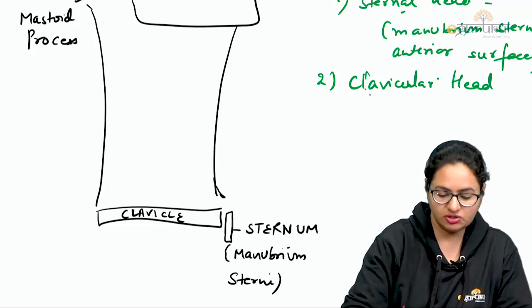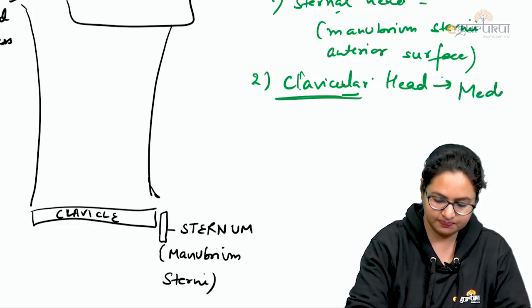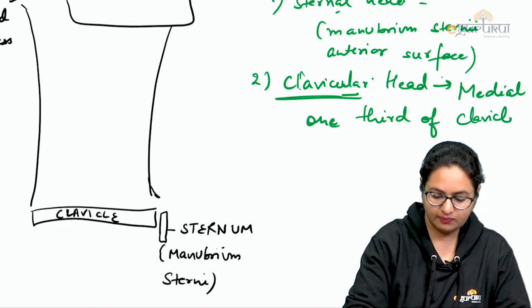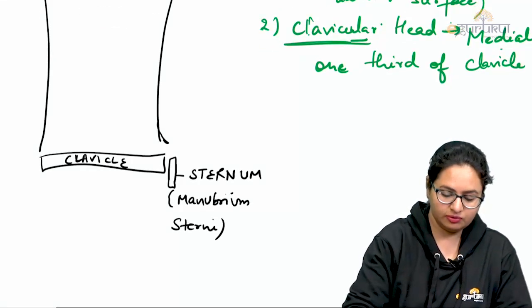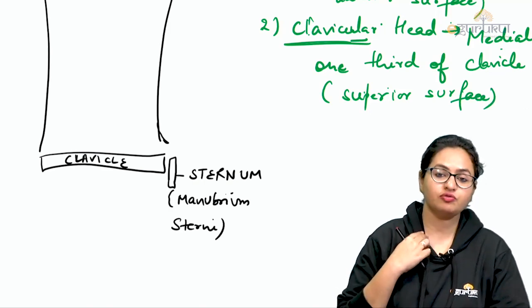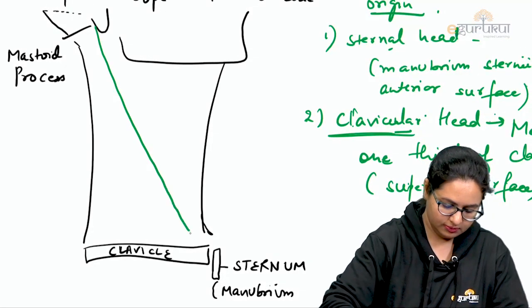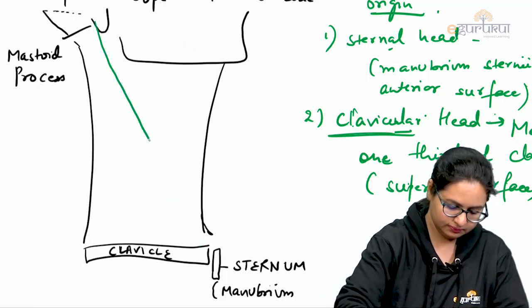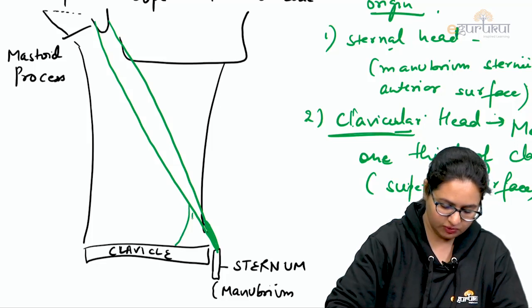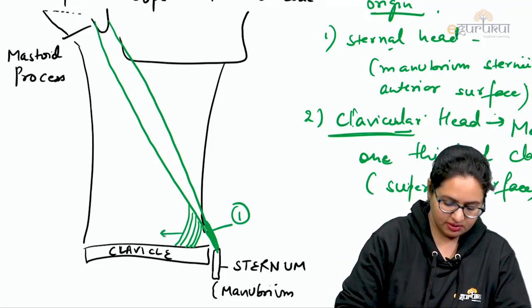The clavicular head, as the name suggests, arises from the clavicle — more specifically from the medial one-third of the clavicle and from its superior surface. We can now draw these two heads: one head arising from the sternum and another from the superior aspect of the medial one-third of the clavicle — this is the sternal head and this is the clavicular head.